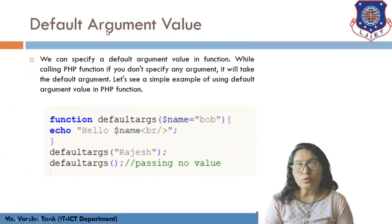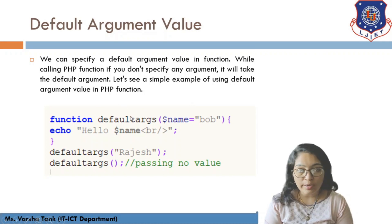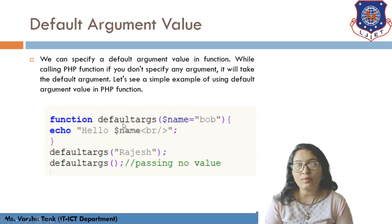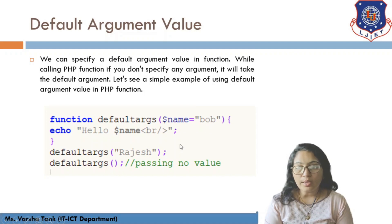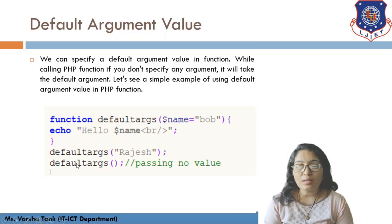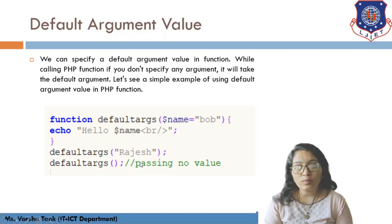You can also define a default argument in a PHP function. If you do not provide an argument, the function uses the default value. For example, if the default argument for $name is 'Bob', calling the function without an argument displays 'hello Bob'. But if you pass 'Rajesh', it displays 'hello Rajesh'. That is how default arguments work.